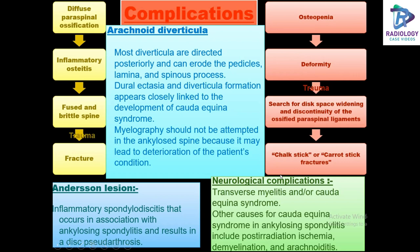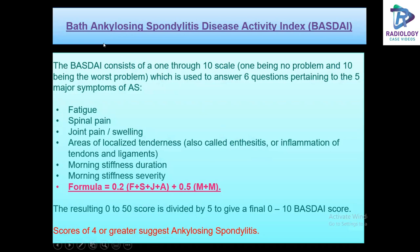The Bath Ankylosing Spondylitis Disease Activity Index (BASDAI) is a 10-point scale where a score of 4 or greater suggests AS.